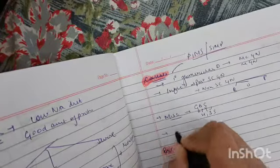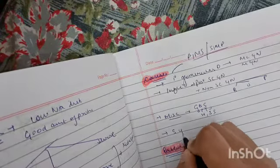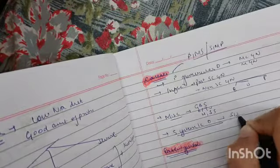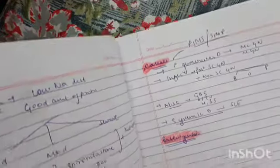S stands for systemic disorders like SLE, vasculitis, and Goodpasture syndrome.